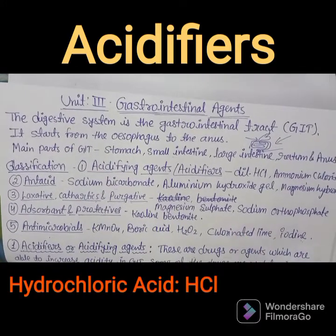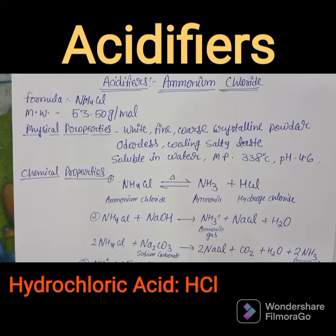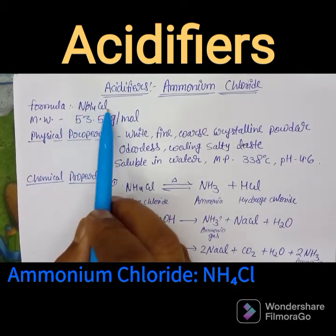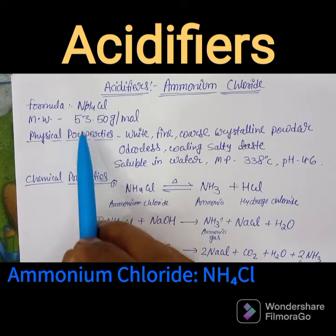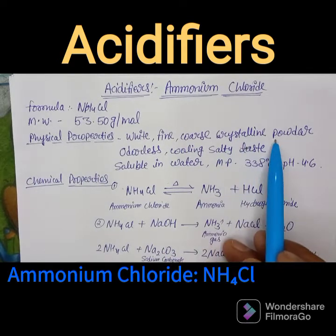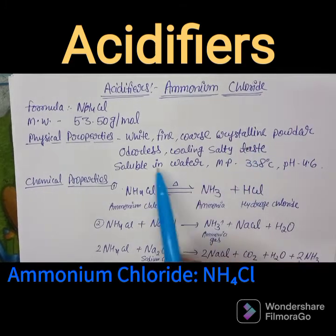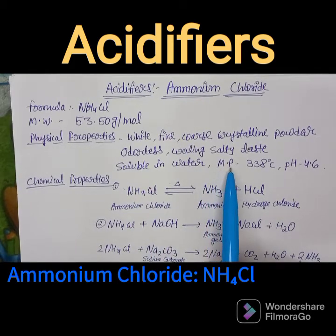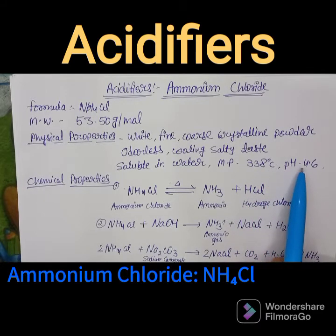The second example of acidifying agents is ammonium chloride. Its molecular formula is NH₄Cl with a molecular weight of 53.50 g/mol. Physical properties: it is a white, fine, coarse crystalline powder that is odorless and has a cooling and salty taste. It is soluble in water, has a melting point of 338°C, and a pH of 4.6.